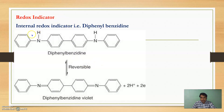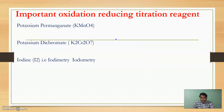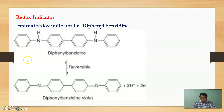These are the redox indicators, specifically the internal redox indicator diphenyl benzidine. In its reduced position, these species are colorless, but after the loss of electrons, it gains a violet color. By using this property, we can use diphenyl benzidine as an indicator in redox titration. Thank you.